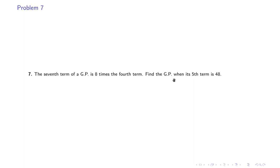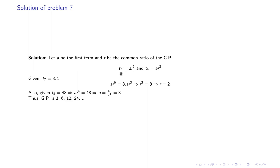The seventh problem: the seventh term of a GP is 8 times the fourth term. Find the GP when its fifth term is 48. The seventh term is ar^6 and the fourth is ar^3. Setting ar^6 = 8·ar^3 gives r³ = 8, so r = 2. Since the fifth term ar^4 = 48 and r = 2, we get a = 3. Therefore the GP is 3, 6, 12, 24.